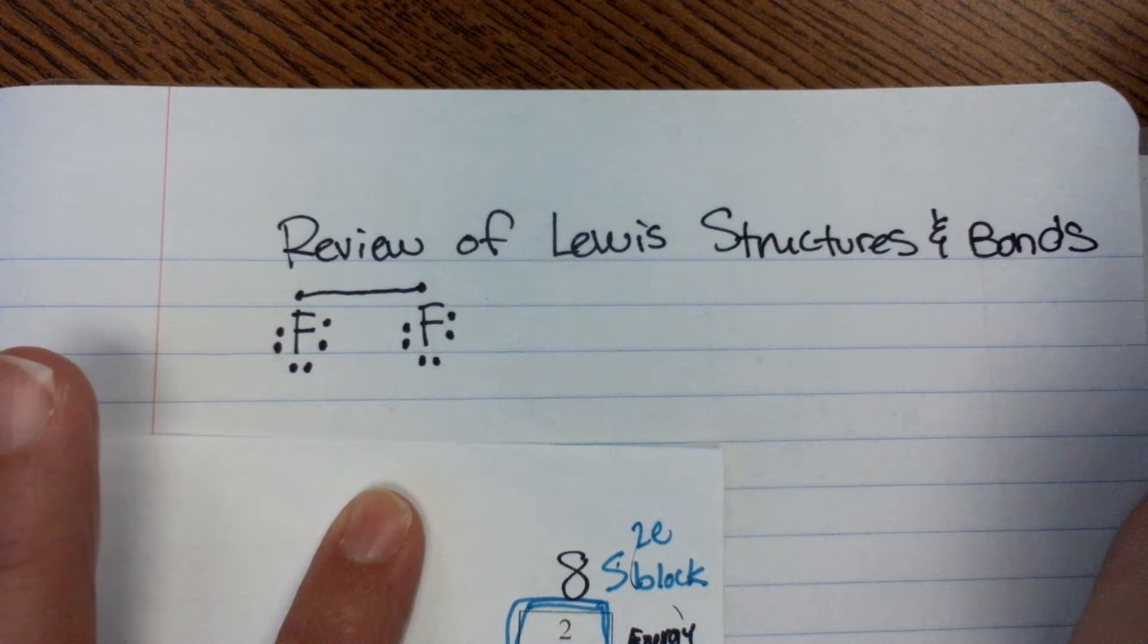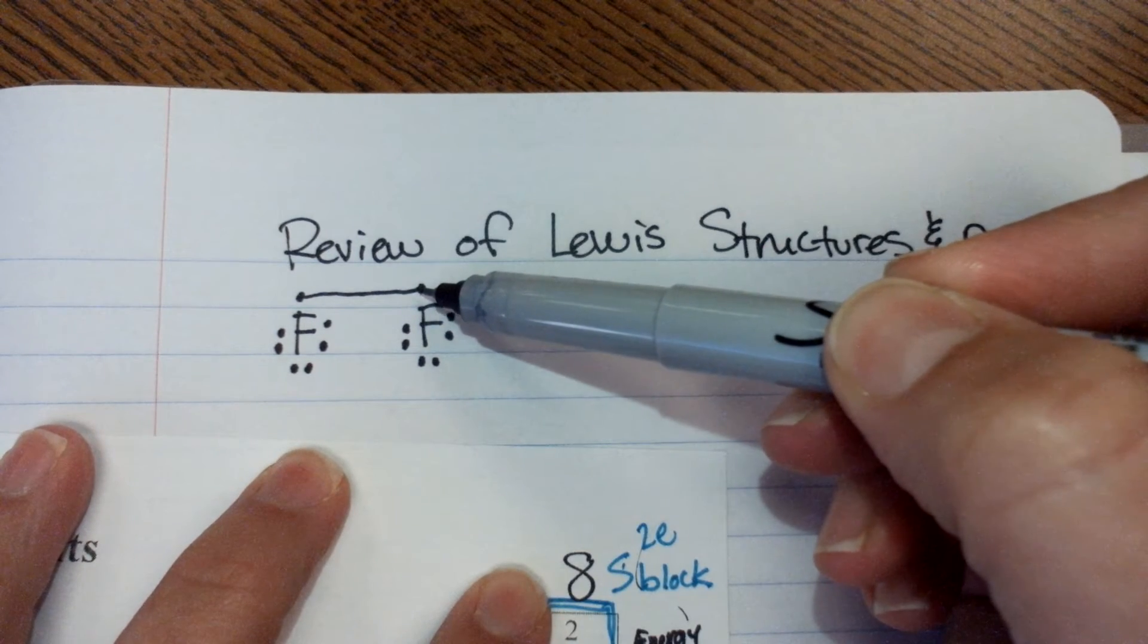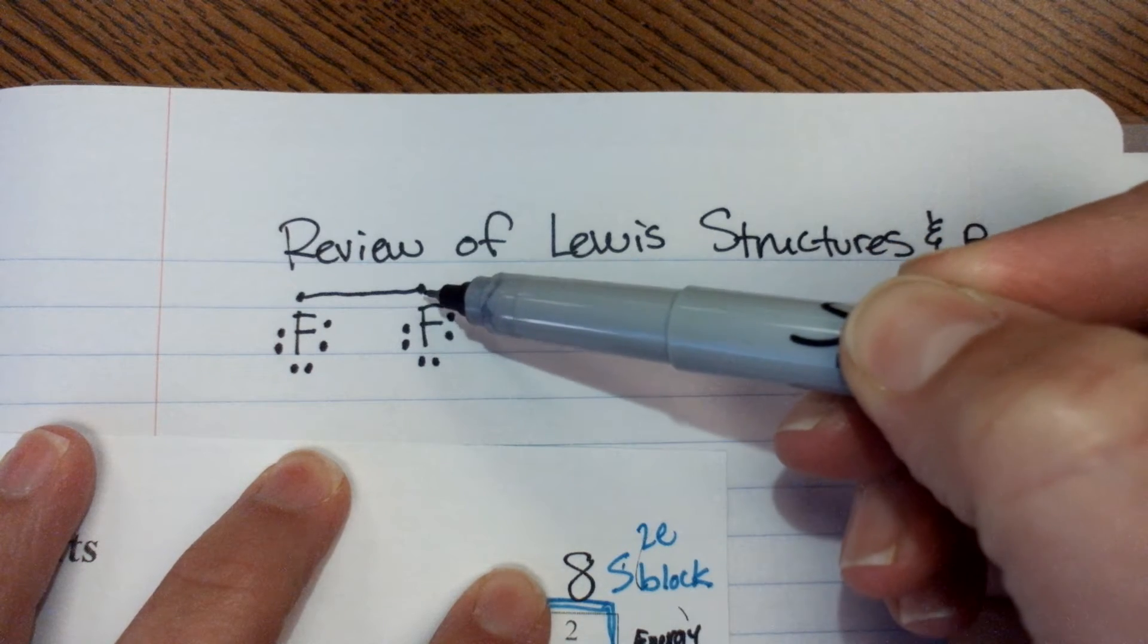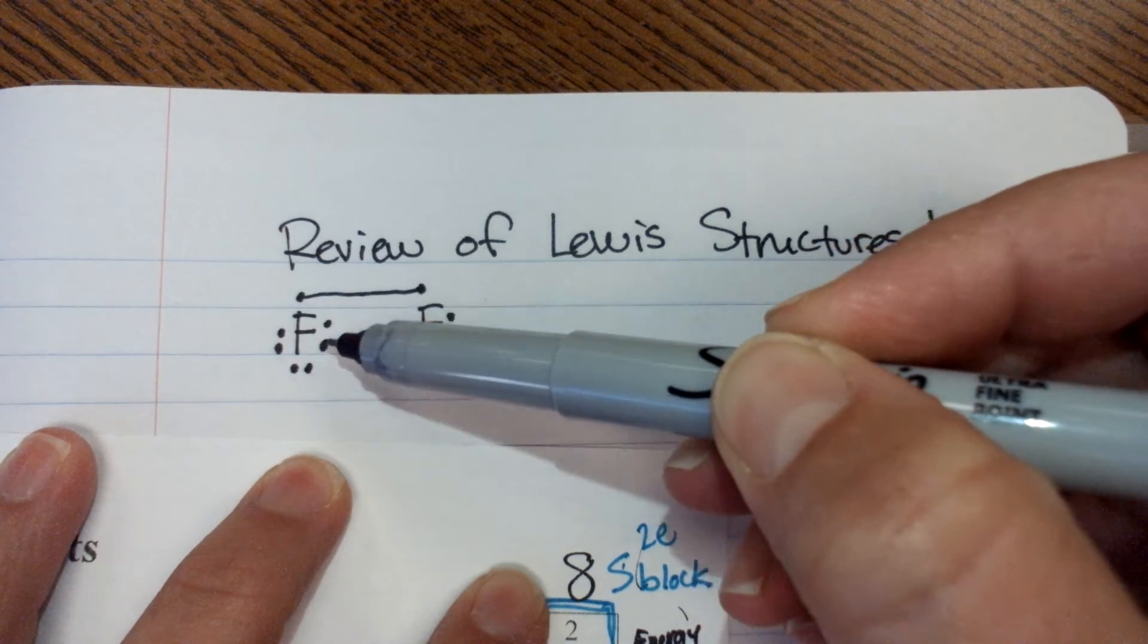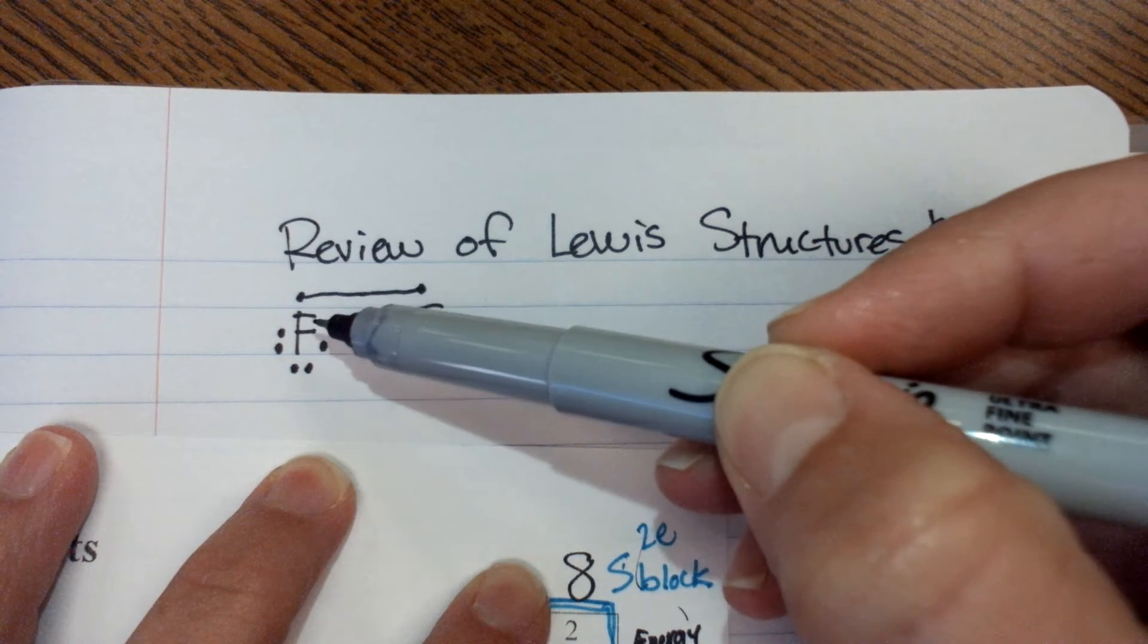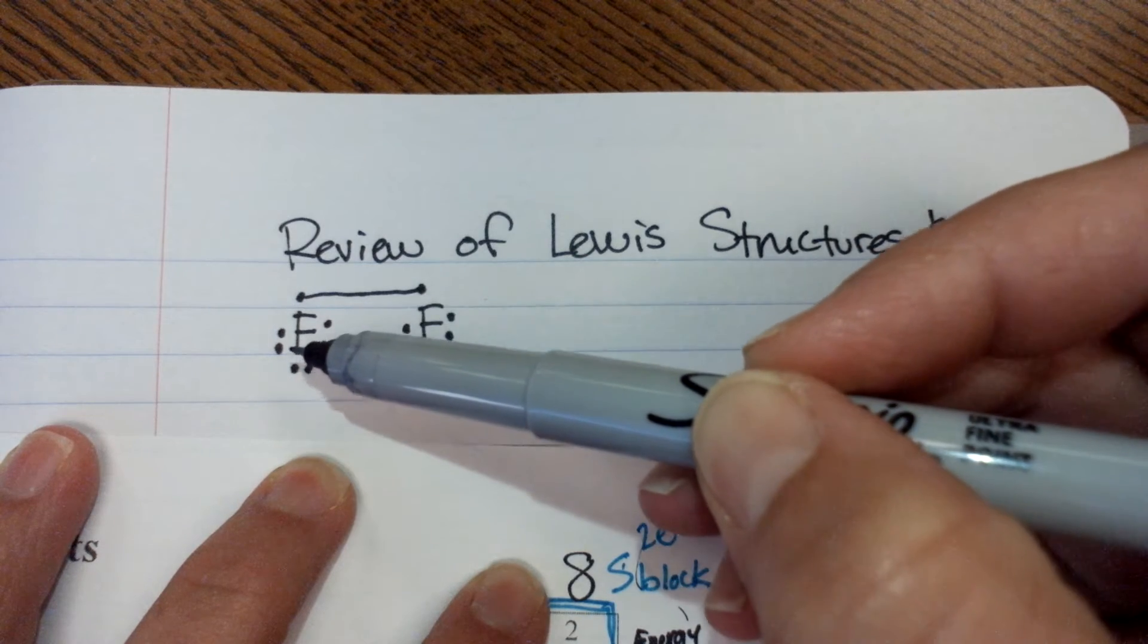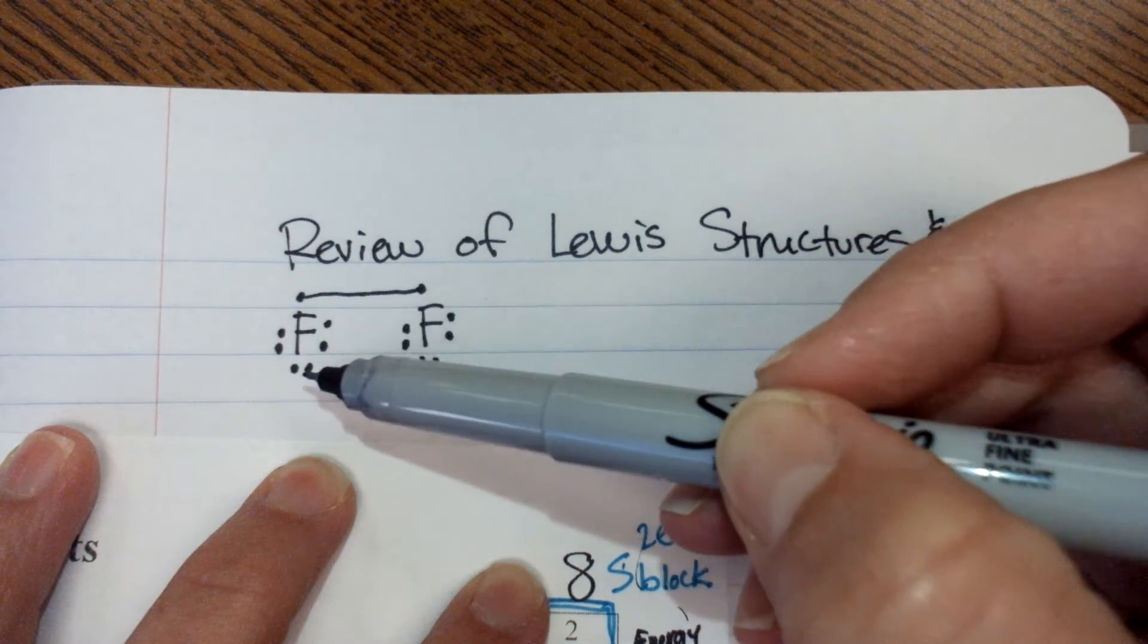All right. So what happens is this electron over here with our second fluorine atom can go over and fly all around our first fluorine atom. So the first fluorine atom then has one, two, three, four, five, six, seven, eight. So a full octet.